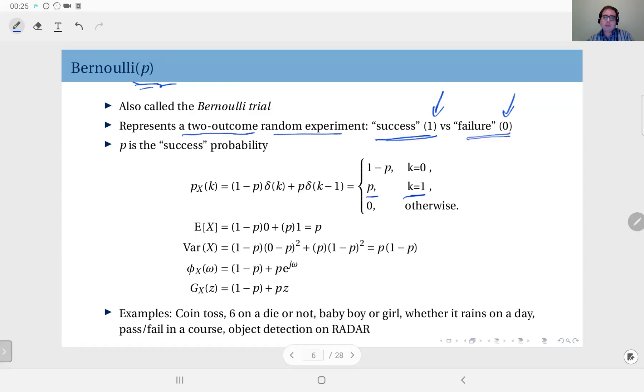Based on this, the expected value is p. The variance is p times 1 minus p. And you can compute the characteristic function and the generating function given here, quite straightforward. You just apply the definitions.